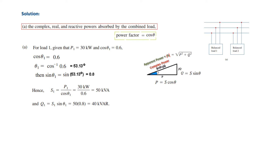Now we calculate Q1 = S1 · sin θ1 = 50 × 0.8 = 40 kVAR. The complex power for load 1 is written as S1 = P + jQ = 30 + j40 kVAR. P is given as 30 kW and Q1 we found is 40 kVAR.